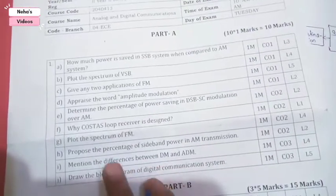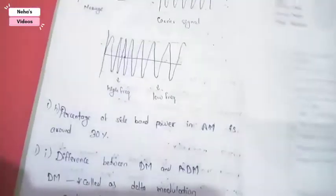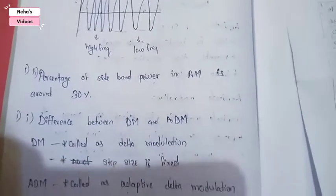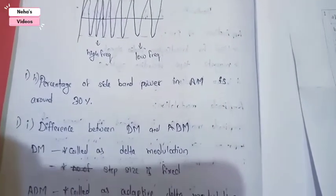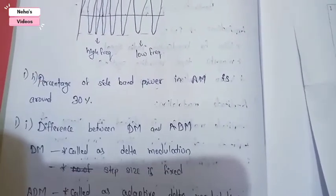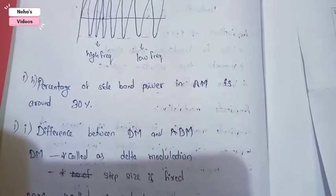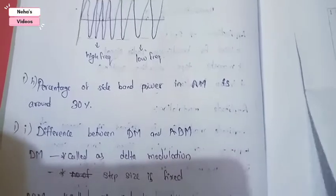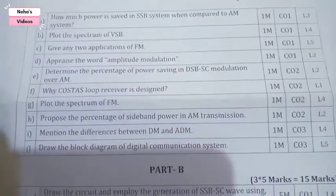The next question asks to find the percentage of sideband power in AM transmission. In AM transmission, the sideband power is 30%. That is the power used in one of the sidebands in AM transmission.